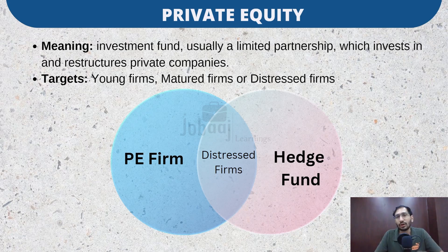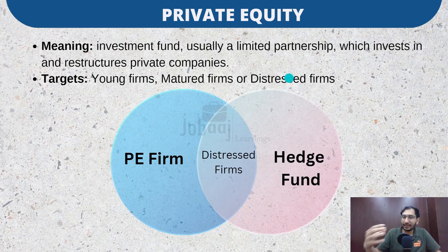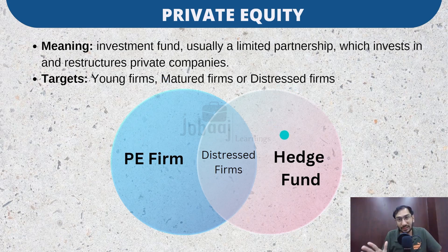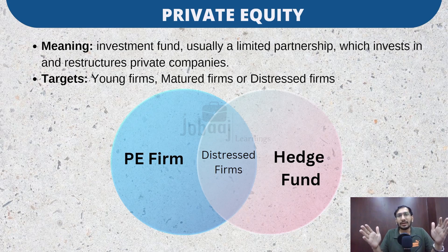So who are the targets of PE firms? It can be a young growth firm or a matured firm as well. PE firms can go for LBO transactions involving matured firms, or they can also target distressed firms. The process remains the same, but distressed firms are targets for both PE firms and hedge funds. PE firms will stick with the firm, try to revive it, generate value, and then sell it off, which takes a longer time horizon.